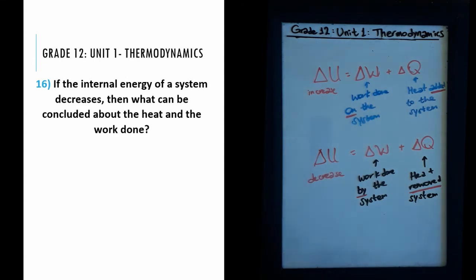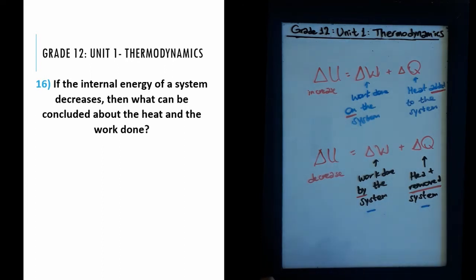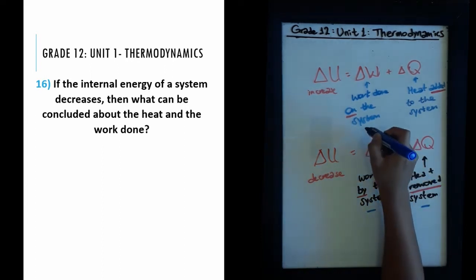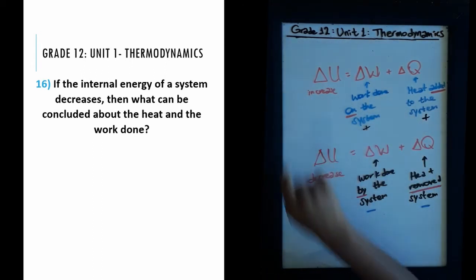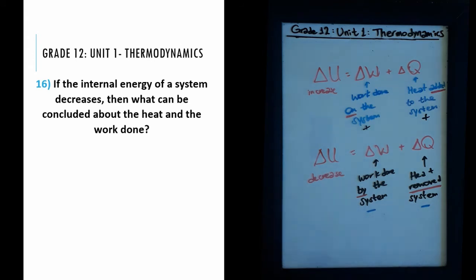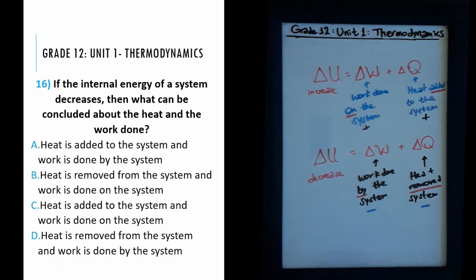If there is a decrease in internal energy, both these concepts would have to be negative. So ΔW and ΔQ are both negative values in this case, whereas for an increase they are both positive. Two positive values cause an increase and two negative values cause a decrease in internal energy. Looking at our choices, we see options talking about addition and removing, and work done on versus work done by.